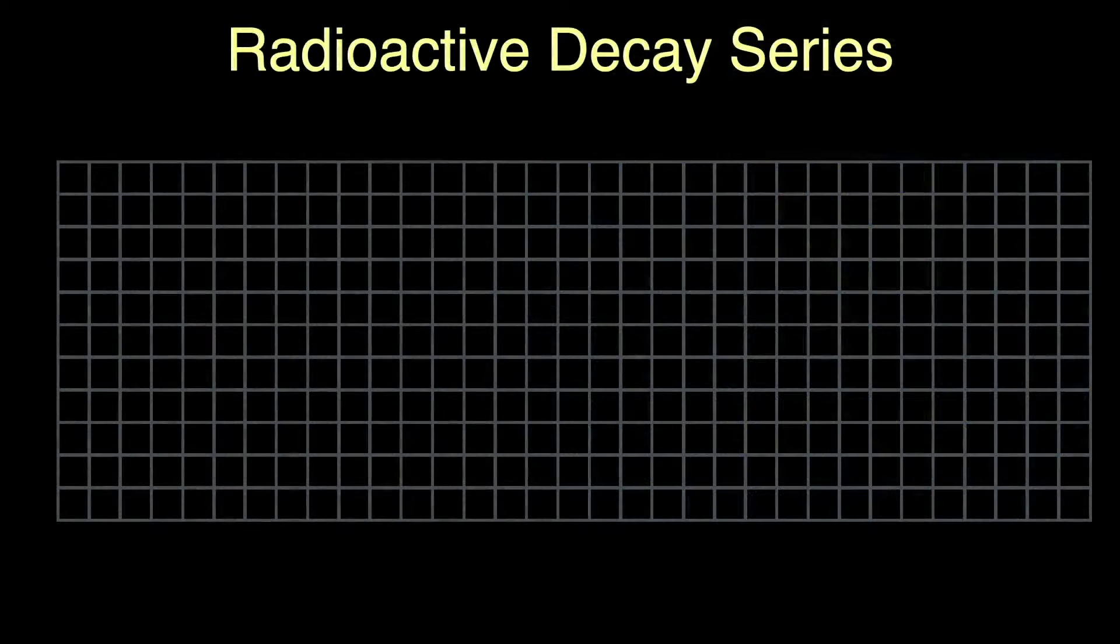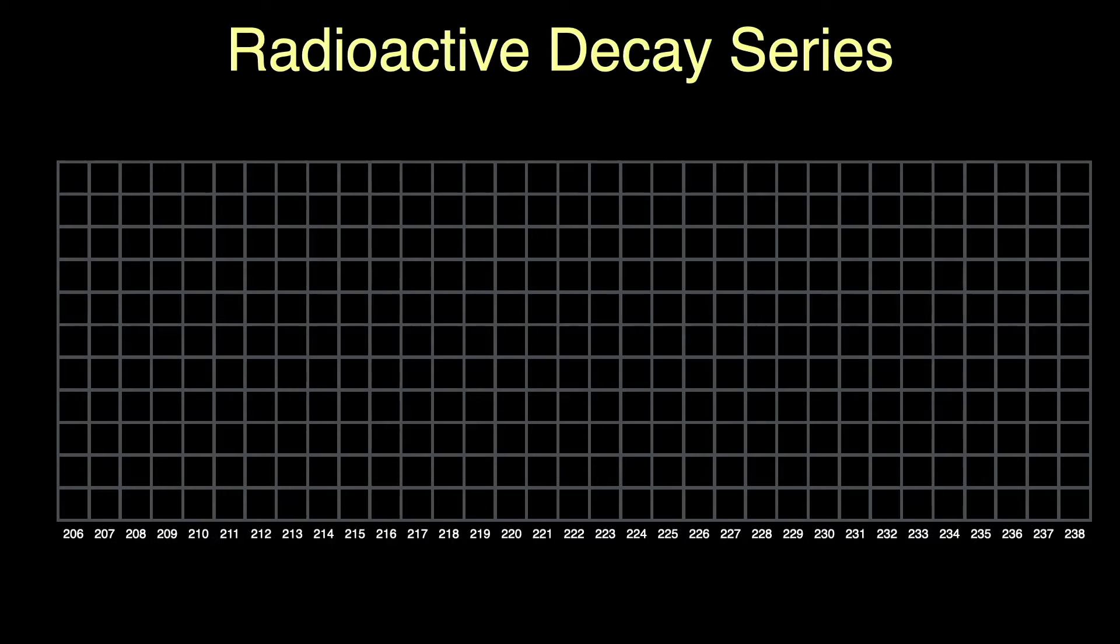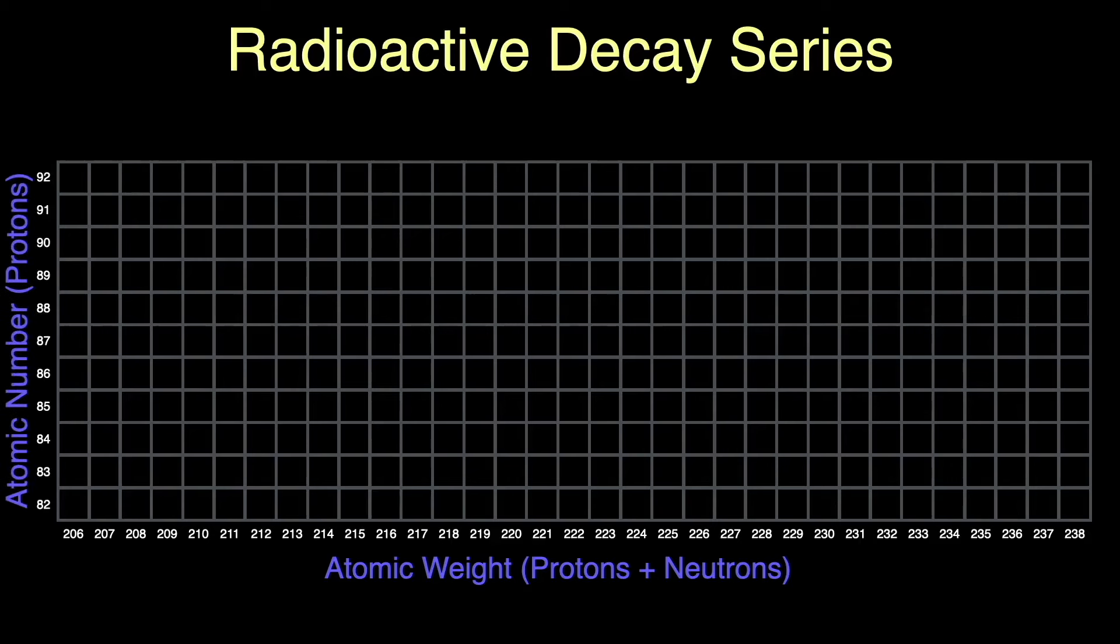I've mentioned that all francium is created from radioactive decay of other elements. Let's look at that. I want to show you one of the decay series that leads from uranium to francium and, ultimately, to lead, and I want to do it on a chart you'll see in many physics books. We're only using a very small portion of a much larger chart. On this chart, the horizontal axis shows how many protons plus neutrons are in the nucleus. This is related to the atomic weight of the isotope. The vertical axis is the number of protons in the nucleus, its atomic number.